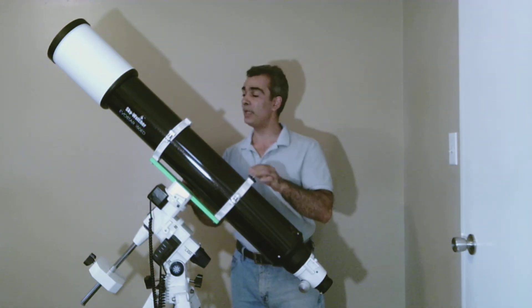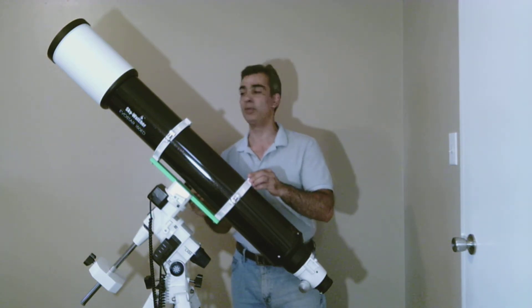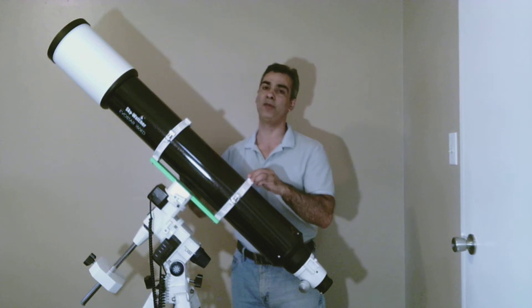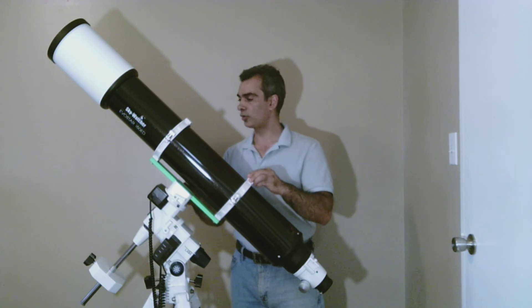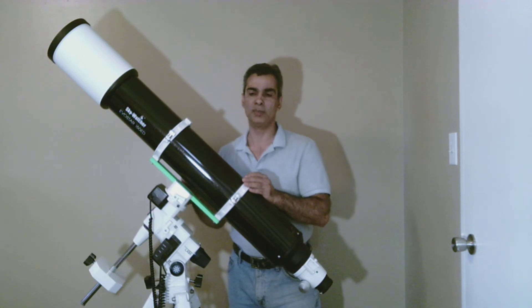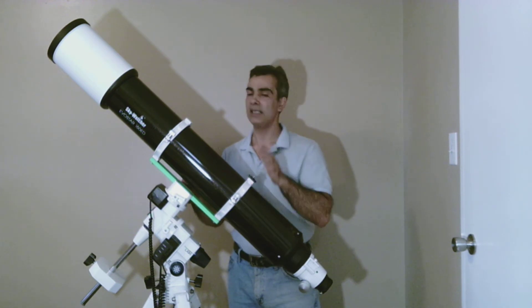So hopefully, maybe in the future, maybe Skywatcher, as they keep on making these, maybe people will ask for this scope in the FPL 53 glass, because there's no way in this price range this is FPL 53. There's just no way. It can't be. Even though they don't tell you, you just know it can't. So maybe I'll do another video to actually test it under the stars. Maybe I'll try Vega, Jupiter and Saturn, the Moon, and see exactly how much color fringing is on this guy.